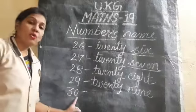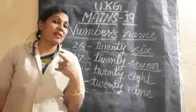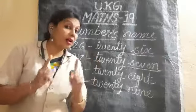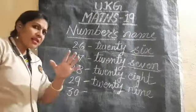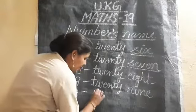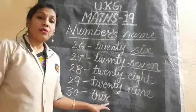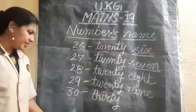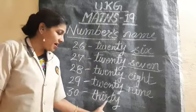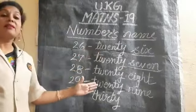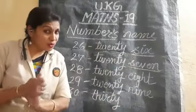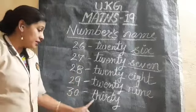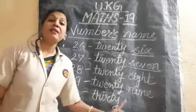Last number is 30. How do we spell 30? Remember 13 — T-H-I-R — so for 30 we write T-H-I-R-T-Y. Thirty. You had learned numbers name from 1 up to 9 and previous classes very well. Now numbers name thirty — T-H-I-R-T-Y — 30.